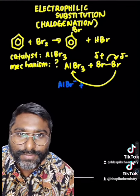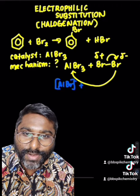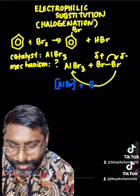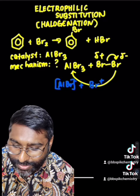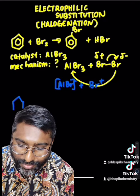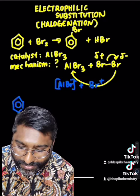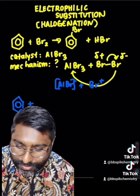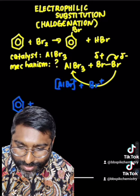The electrophile for this reaction is going to be Br+. So this Br+ ion is going to attack the benzene ring. When you show the curly arrow diagram, make sure that